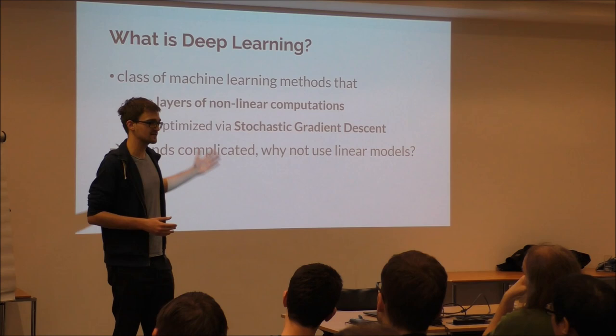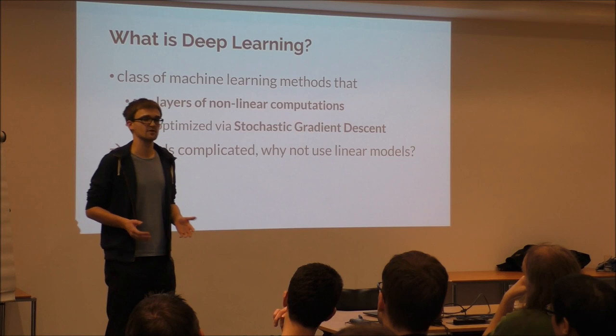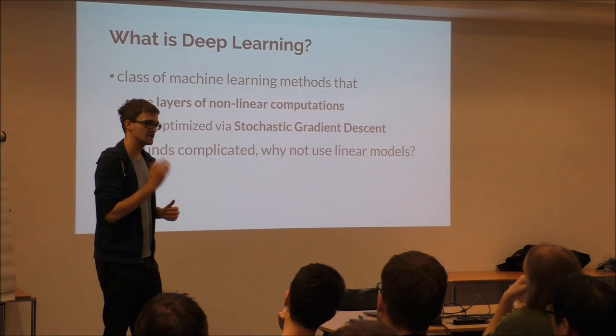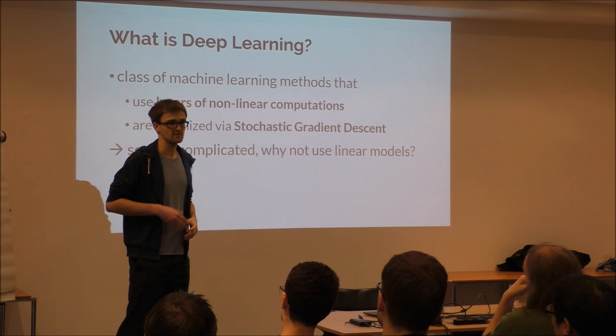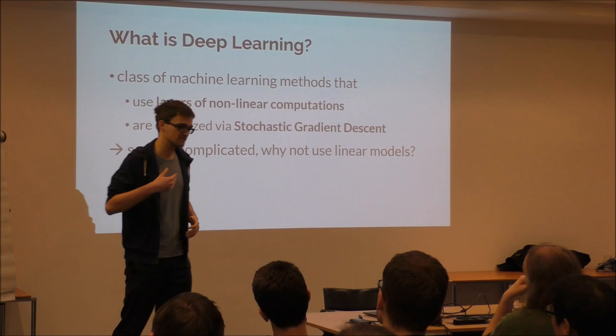So what is deep learning? It's a class of machine learning methods that rely on layers of non-linear computation and that are optimized by stochastic gradient descent. The really important parts are that you have something non-linear and you have multiple layers of that. Stochastic gradient descent is an optimization method, and the importance is that you use very large amounts of data. This sounds really complicated, so we'll start with simple linear models and go on from there.